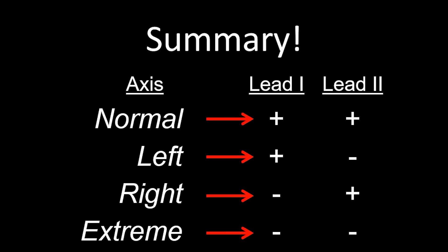So in summary, to look at the axis of the QRS, you only need to look at leads 1 and lead 2. If both are positive, you have a normal axis. If lead 1 is positive and lead 2 is negative, you have left axis deviation. If lead 1 is negative and lead 2 is positive, you have right axis deviation. And if both are negative, you have extreme axis deviation.